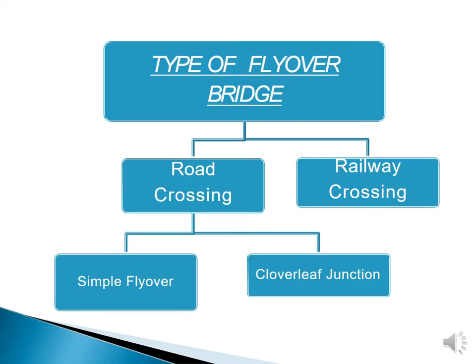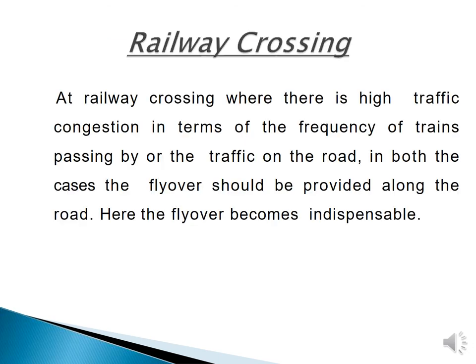There are different types of flyover bridges: road crossing and railway crossing. In road crossing, there is a simple flyover or a cloverleaf junction. In railway crossing, where there is high traffic congestion due to the frequency of trains or road traffic, a flyover is provided along the road. At a junction where a roadway meets a railway and train frequency is very high, a flyover must be constructed at that crossing.